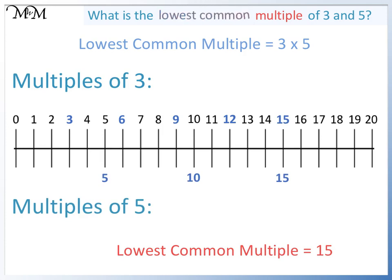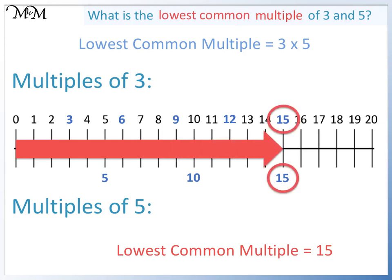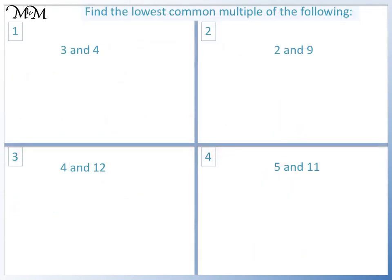The lowest common number in common to both lists is 15, as we found earlier. Here are some questions for you to try. Pause the video and have a go.